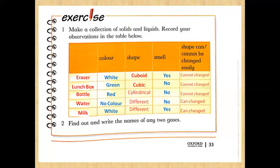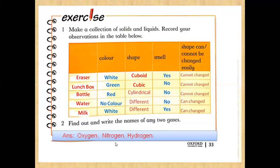Question number two: find out and write the names of any two gases. These are oxygen, nitrogen, and hydrogen — you can write any two. The chemical formula of water is H₂O, where H means hydrogen and O means oxygen. Air is a mixture of different gases like nitrogen, oxygen, and some other gases.